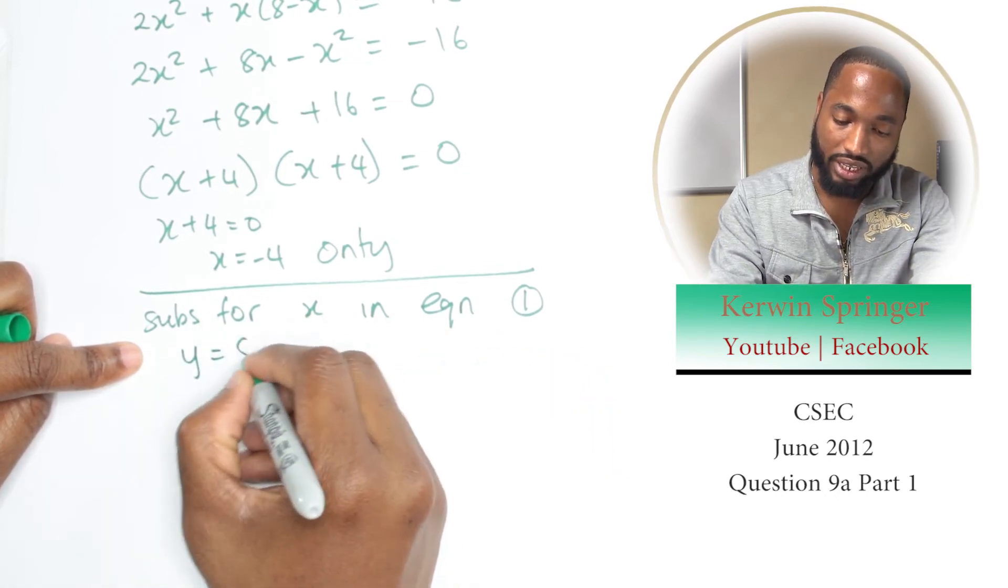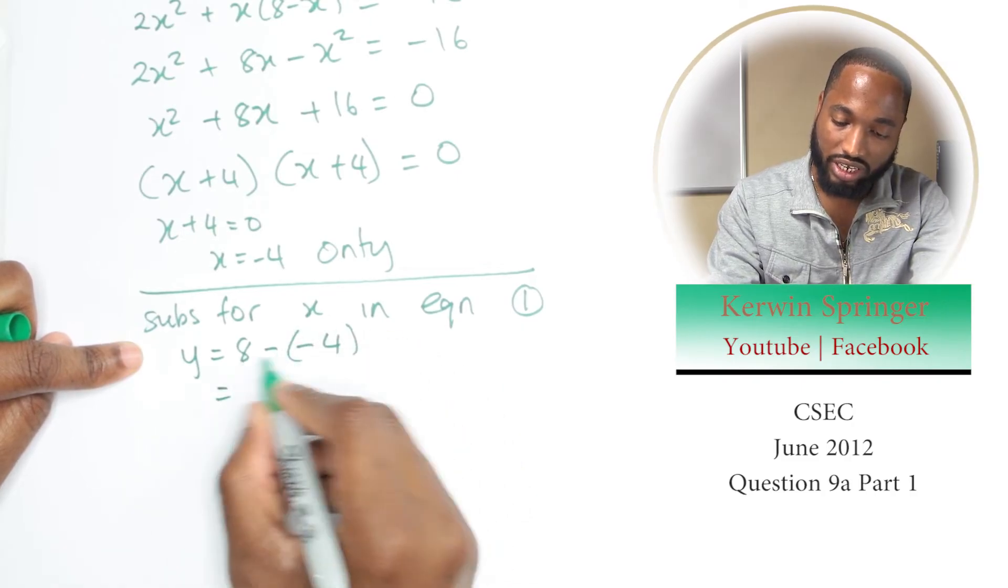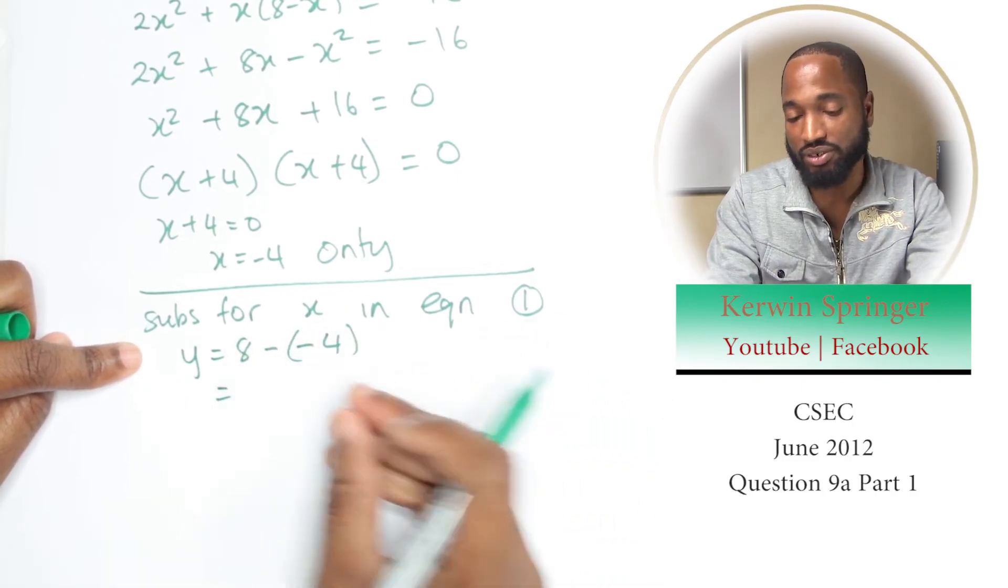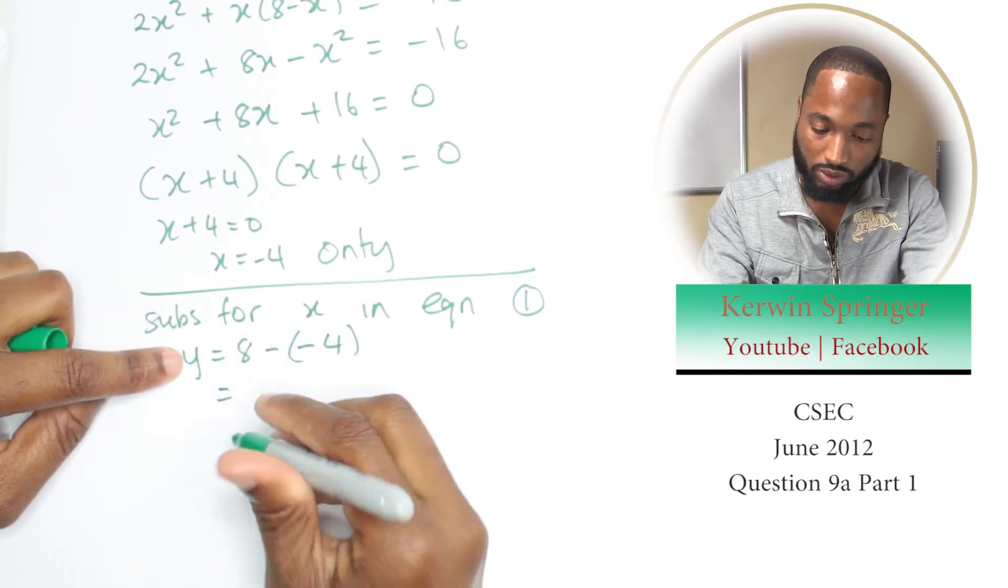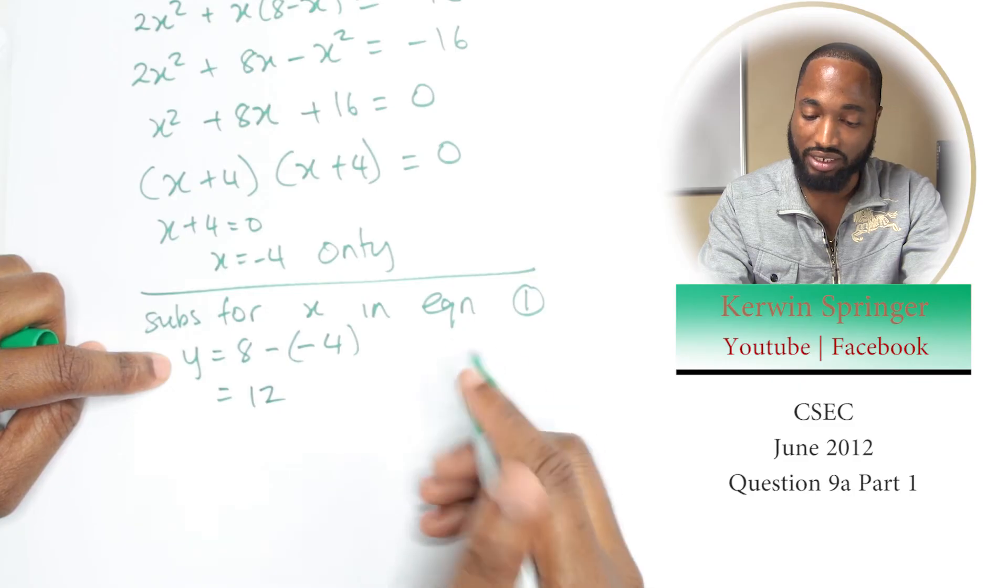This will give y equals 8 take away negative 4, which is 8 plus 4, negative negative is positive, which is 12. So therefore the answers are x equals negative 4 and y equals 12.